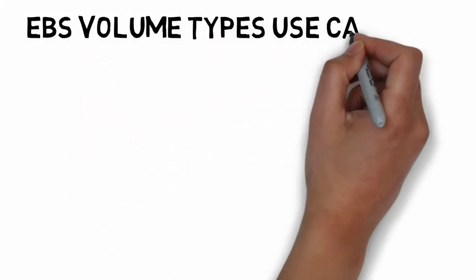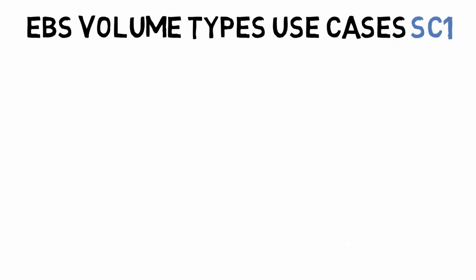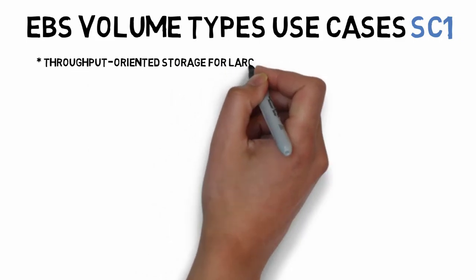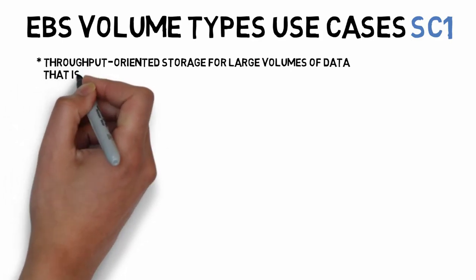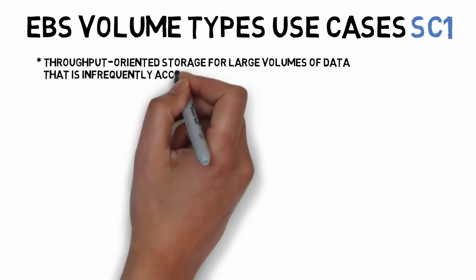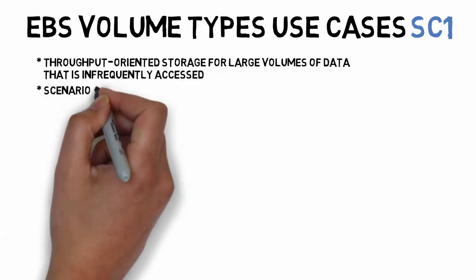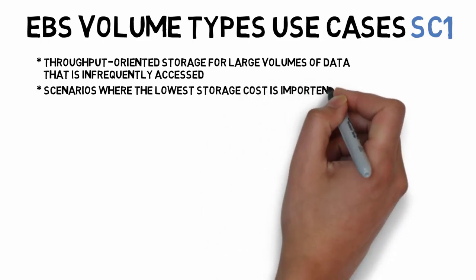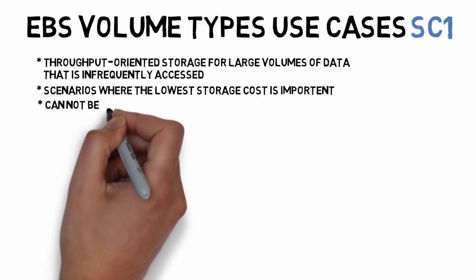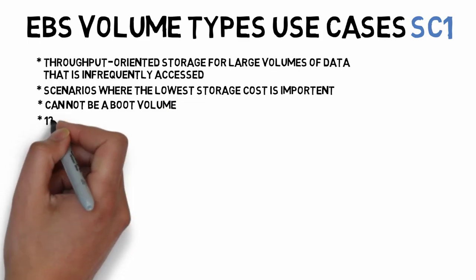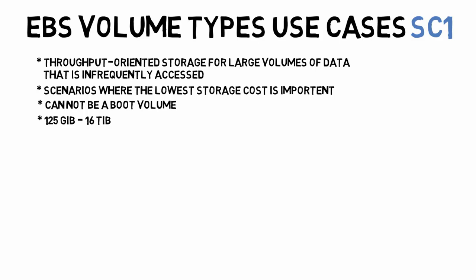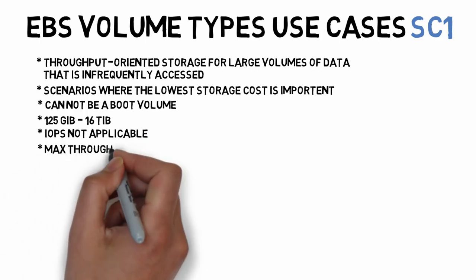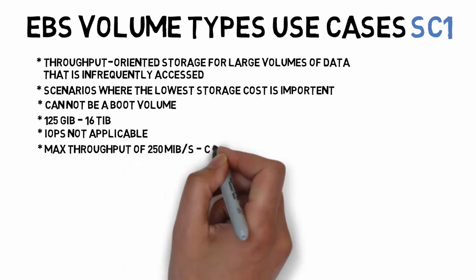Now we talk about SC1 (Cold HDD) EBS volume use cases. This volume type is used where a huge amount of data is stored at the lowest cost. It is throughput-oriented storage for large volumes that are infrequently accessed — typically two or three times per month. This storage cannot be used as a boot volume because you cannot install an operating system on it. The minimum size is 125 GB and maximum is 16 TB. IOPS is not applicable. Maximum throughput is 250 MBps and it supports bursting.